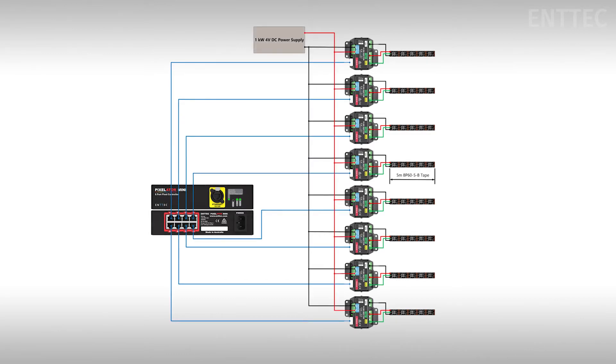Our 8P60-5-B 5 volt tape needs dual power injections when working with lengths between 1.5 and 7 meters. Keeping this in mind, here is how our powered system would look.